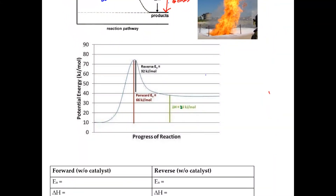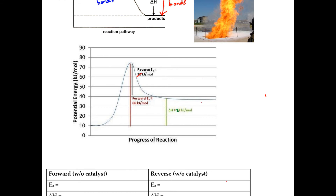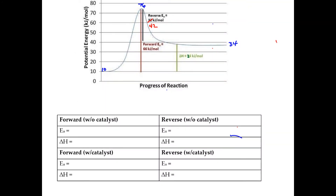Further down the page we see another potential energy diagram. There's a correction here: this value should say 42 kilojoules. Looking at the energies, this starts at 10 kilojoules, ends at 34 kilojoules, and the top is 76 kilojoules. The activation energy is the difference between the beginning and the top, so the activation energy for the forward reaction is 66 kilojoules — the difference between 10 and 76.